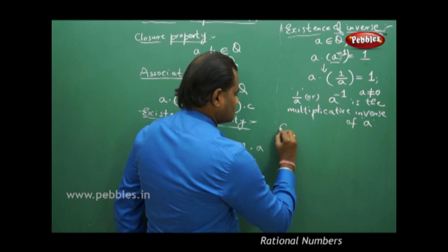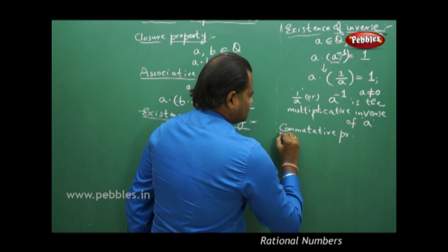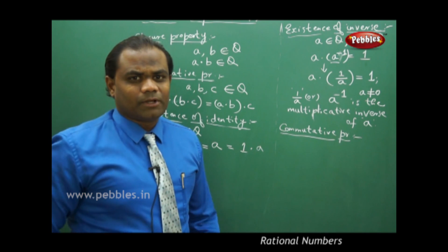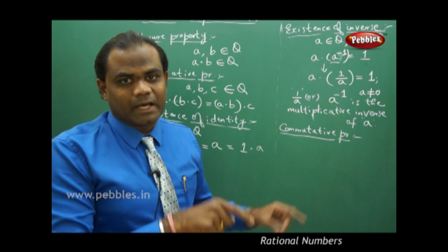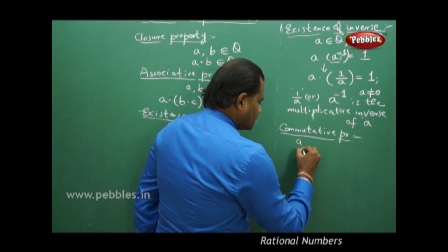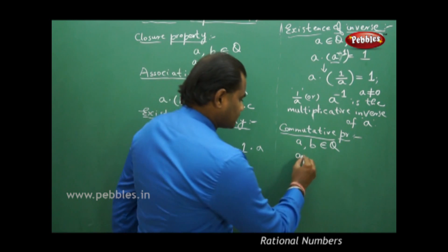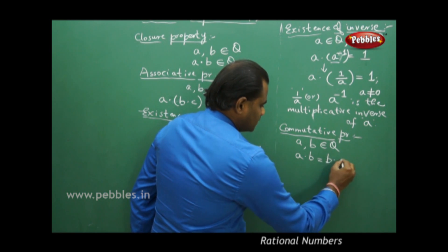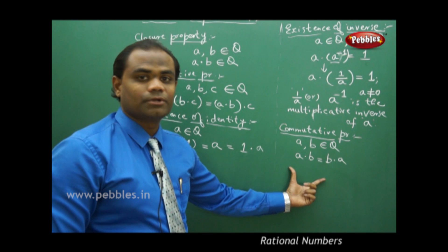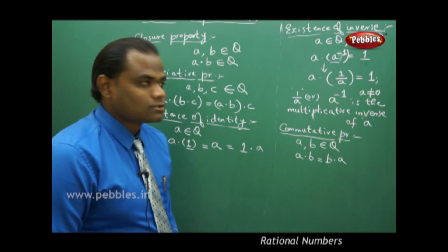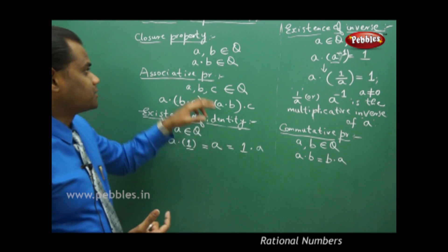The next property is the commutative property. Commutative property in addition was A+B = B+A for all A, B belonging to Q. So instead of plus, we have multiplication here. If I take two elements A and B belonging to Q, then commutative property under multiplication states that A×B = B×A. These are the basic properties under multiplication discussed in similar fashion as for addition.